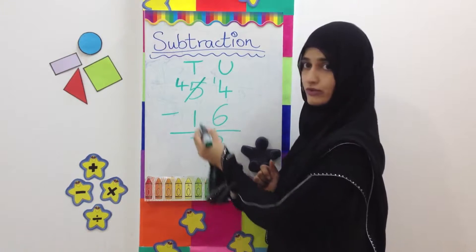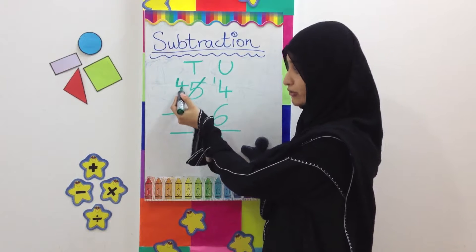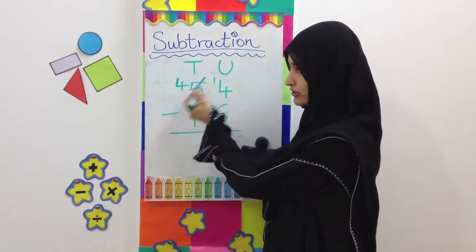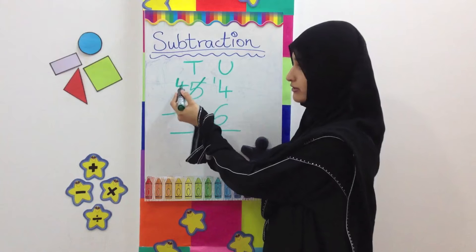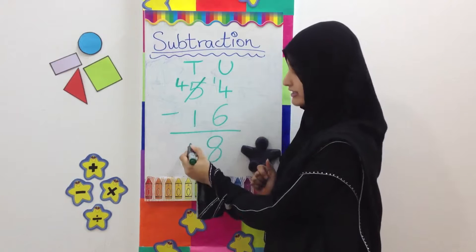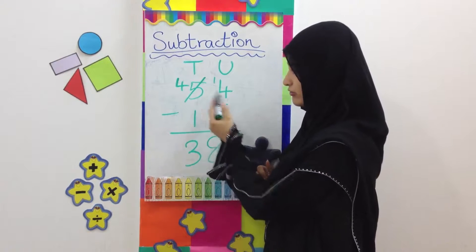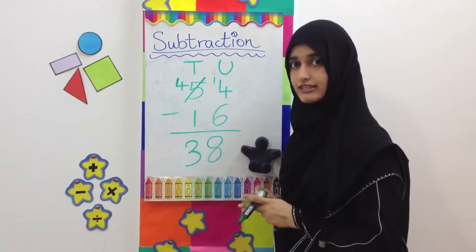We write that over here and now we solve the tens. We have 4 tens now, not 5 because we already borrowed 1 here. 4 minus 1 equals 3. 54 minus 16 equals 38.